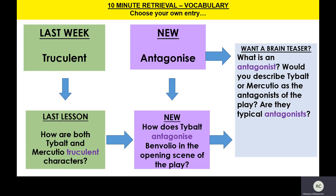Now, at the start of the play in Act 1, Scene 1, we see Tybalt try to antagonise Benvolio in that opening dialogue of theirs. So how does Tybalt antagonise Benvolio in the opening scene? Think about the way he insults him. And if you want to aim higher, try to remind yourselves: what is an antagonist? It links to the word antagonise, and we looked at it in our last lesson. Would you describe Tybalt or Mercutio as the antagonist of the play, and are they typical antagonists? I'm just going to ask the cover teacher to pause the video so you can answer those two questions, and then I'll run through some of the answers.